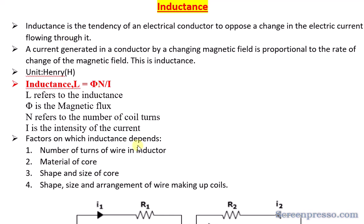Inductance is the tendency of an electrical conductor to oppose a change in electric current flowing through it. In other words, it describes how much opposition to a change in electric current occurs whenever current flows through the conductor — that is what we call inductance.